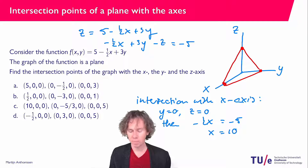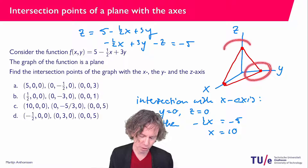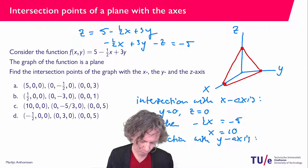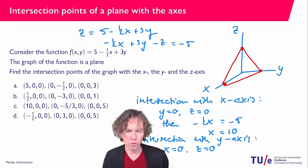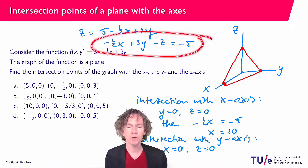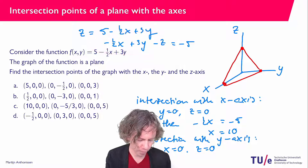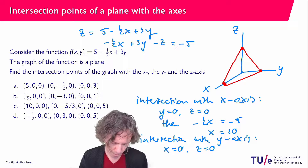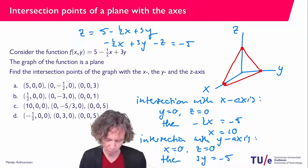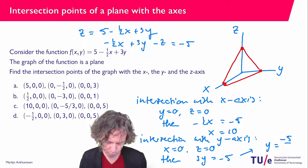The same approach applies to the intersection with the y axis and the z axis. For the y axis, we put x equal to zero and z equal to zero, and substituting into the equation gives us three y equals minus five. So we find that y equals minus five over three.